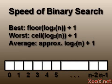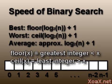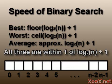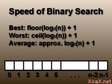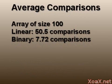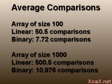Our algorithm for the binary search requires approximately log base 2 of (n + 1) comparisons for the best, worst, and average cases. The binary search is much faster on average than the linear search. For comparison, consider an array of 100 elements: the average number of comparisons for linear search is 50.5, while for binary search it is 7.72. For 1,000 elements, we have 500.5 comparisons for linear search and 10.976 comparisons for binary search.